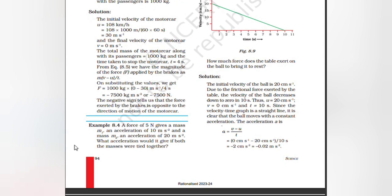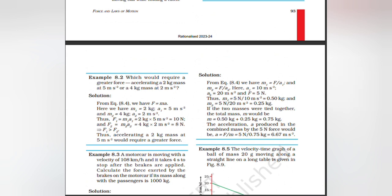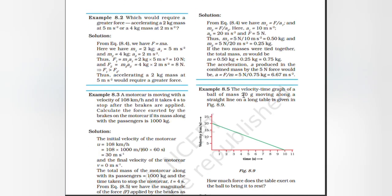A force of 5 N gives mass m₁ an acceleration of 10 m/s² and mass m₂ an acceleration of 20 m/s². What acceleration would it give if both masses were tied together? m₁ = F/a₁ = 5/10 = 0.50 kg; m₂ = F/a₂ = 5/20 = 0.25 kg. Total mass m = 0.50 + 0.25 = 0.75 kg. Acceleration produced in the combined mass by 5 N force: a = F/m = 5/0.75 = 6.67 m/s².